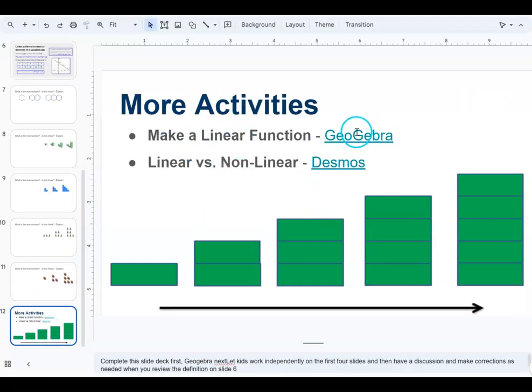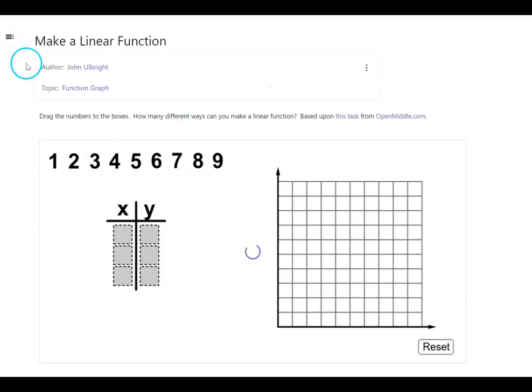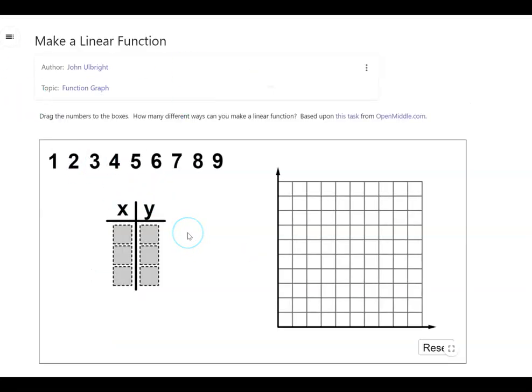The next one is making a linear function at GeoGebra. So I did not give them this slide so you would need to give them the link out to this activity. It's going to go to open middle and then it'll pop right into here. What you're going to do is they're going to drag these numbers into this table and I'm not going to tell them how to make it linear. That's kind of on them. Some will know if they're taking this in ninth grade. If they're taking Algebra 1 they probably already had something to do with linear so they may already know the answer.